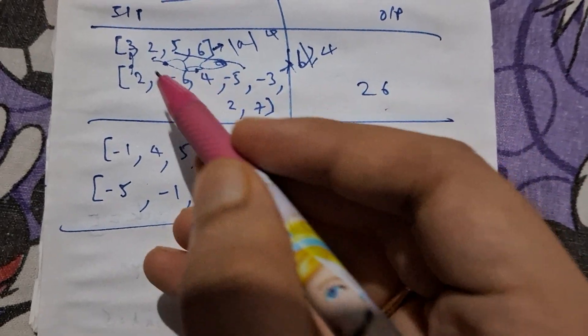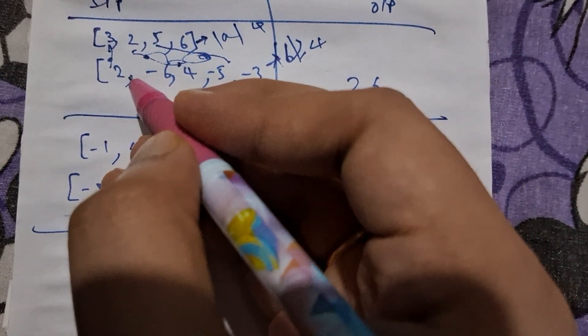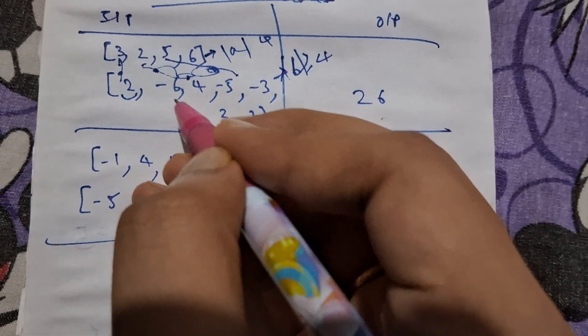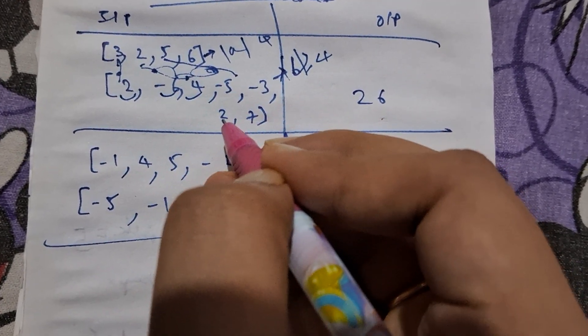And give the output. So if you are taking 3, 2, 5, 6 and from this array if you are taking 2, minus 6, 4...